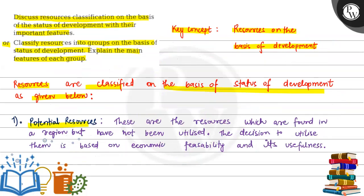First, we will see potential resources. These are the resources which are found in the region but have not been utilized. The decision to utilize them is based on economic feasibility and usefulness. In other words, we know about these resources, but we will extract them only when we have a need or economic feasibility.